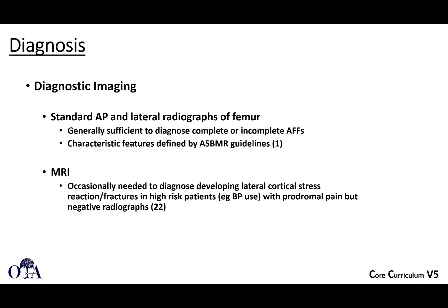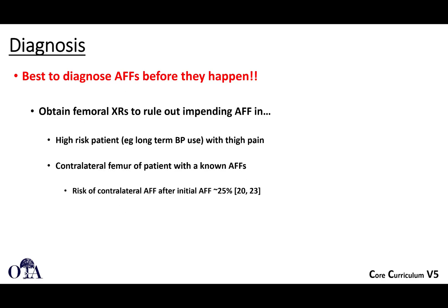Imaging is standard AP and lateral views, and usually these are sufficient. If you look closely, you're going to see that beaking. Occasionally, MRI can help diagnose a developing lateral cortical stress reaction in a patient who has pain but negative x-rays — this can identify something early before beaking develops. As an orthopedic surgeon you may not see these until they fracture, but remember these can happen contralaterally, so when you diagnose an atypical femur fracture, look at the other side.